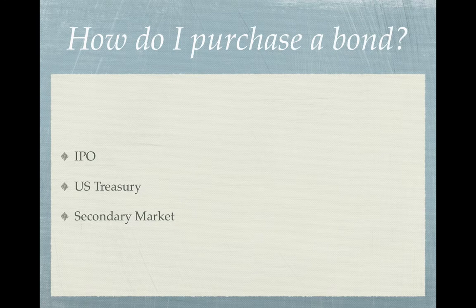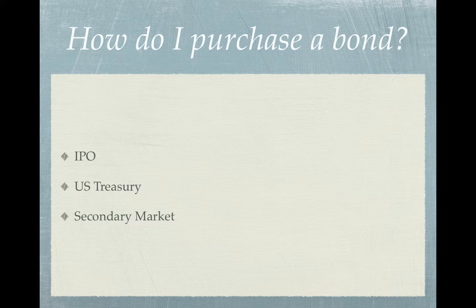How do you purchase a bond? Bonds are introduced to the market in the form of an IPO, or initial public offering. Most investors do not purchase those bonds directly from the IPO — it is much more cost effective for individuals to go straight to the big institutional investors. The exception to this is the purchase of government bonds, where any investor can purchase directly from the U.S. Treasury and no brokers are needed.